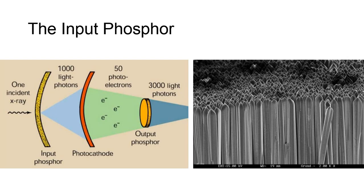The input phosphor can have varying diameters, while the output phosphor is always 1 inch. Typical sizes for the input phosphor include 15, 23, 30, or 40 centimeters. The difference in size, or the ratio between the input phosphor and the output phosphor, will influence how bright the image can be, as well as the image's resolution. The larger the input phosphor, the more resolution the image will possess.